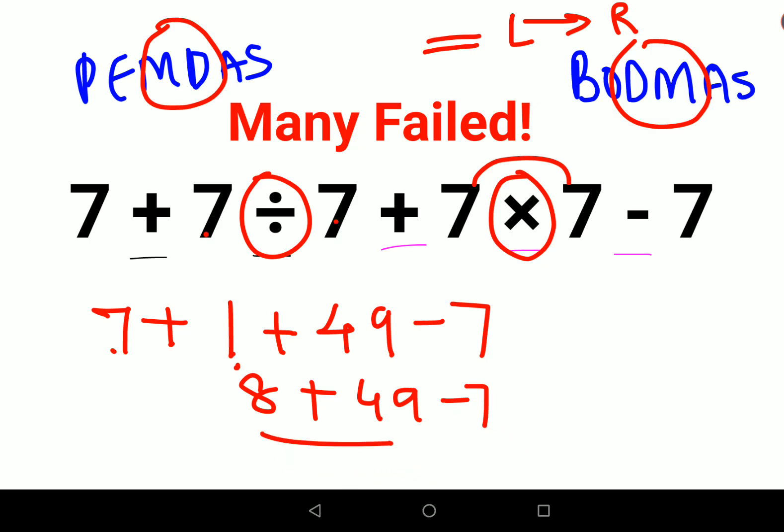So 8 plus 49 that gets you how much? 56 minus 7 gets you... sorry 8 plus 49 gets you 57 minus 7 gets you 50.